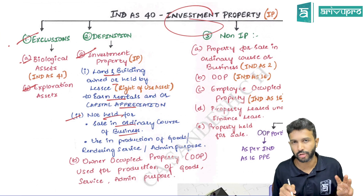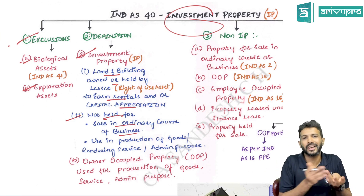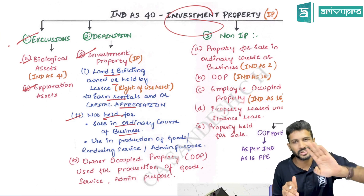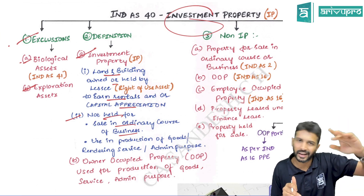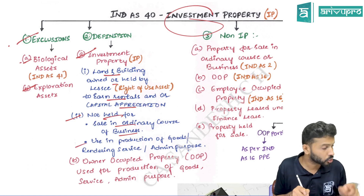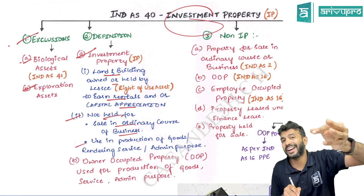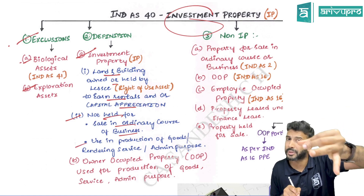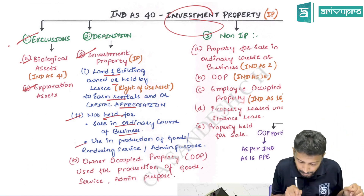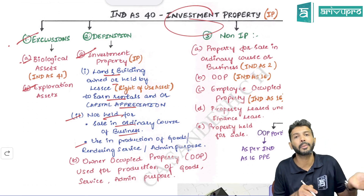Investment property should not be held in the ordinary course of business. If you are holding it for sale in the ordinary course of business, it becomes inventory and Ind AS 2 will apply. That property should not be used for the production of goods, rendering of service, or administrative purpose, because if you are using it for this purpose it will become owner-occupied property and Ind AS 16 will apply.